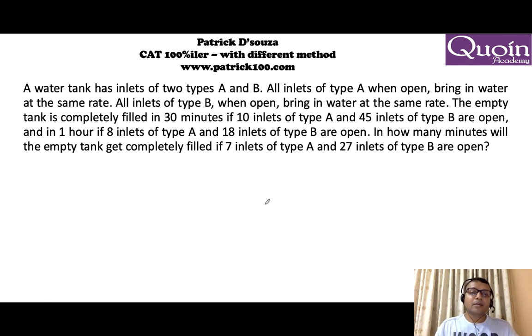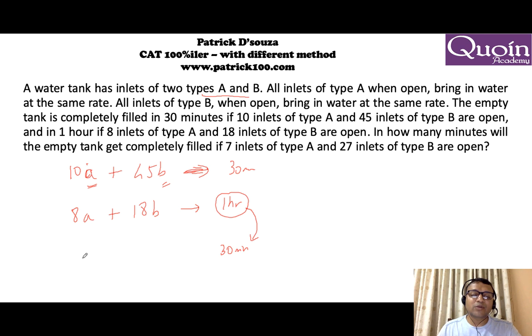A water tank has inlets of two types A and B. This is one of those two variable two equation types. So, we have 10 inlets of A, 10A plus 45B. Let A be the amount filled by A, B will be the amount filled by B, fills in 30 minutes. Fills in 30 minutes whereas 8A plus 18B fills in 1 hour. To compare these two, you have to make the time same. So, I will make this into 30 minutes. To make this time half, you have to double the number of inlet. So, it will be 16A plus 36B. Remember, if I want to reduce the time to half, the number of pipe has to double. So, I know this both are giving you 30 minutes. Now, we can compare A and B.